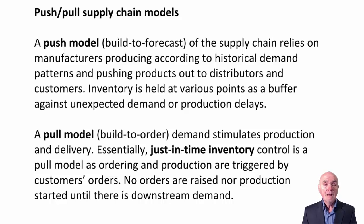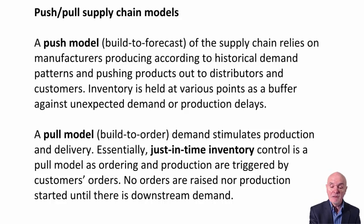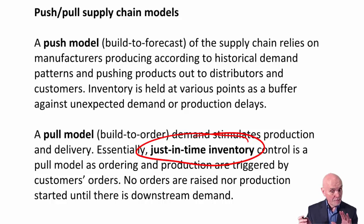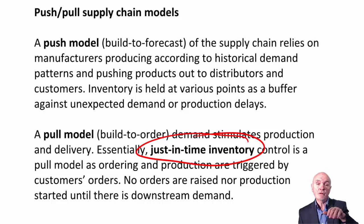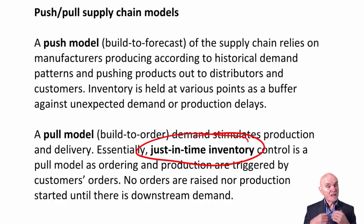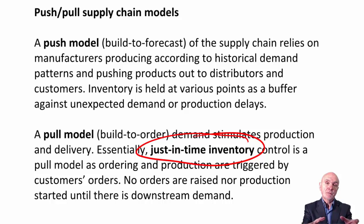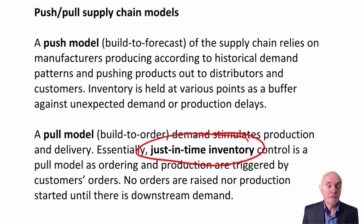A pull model waits for an order to come in. When it gets an order, this stimulates production and delivery — essentially this is just-in-time inventory. In the extreme model, there are no finished goods in inventory and not even any part-finished goods in the factory. When an order comes in, it triggers a production process, which can in many cases trigger a purchasing process from your suppliers. This is very much what Dell was doing — orders come in, consolidate them, send orders to suppliers, receive goods, make them, dispatch to customers, all within a day.